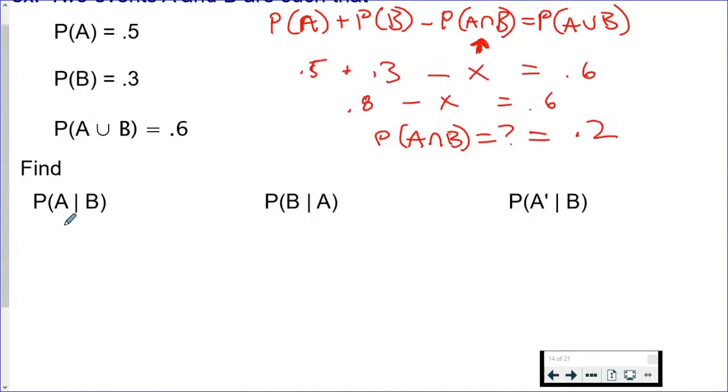So it says find the probability of A given B. Formula is this. We know this is 0.2, we know this is 0.3. That's our answer, we would just reduce that.